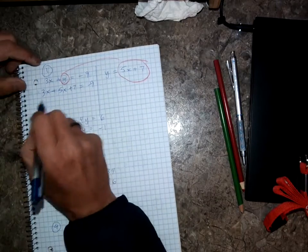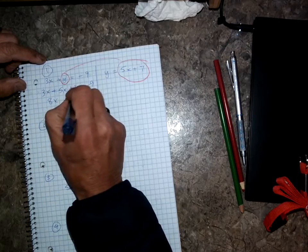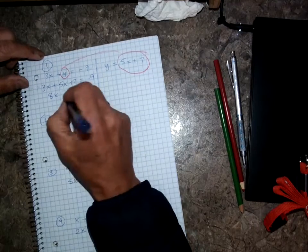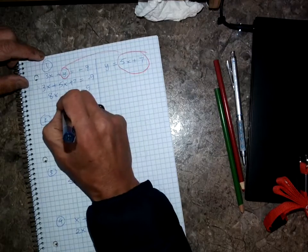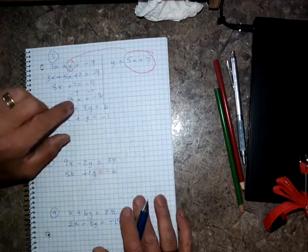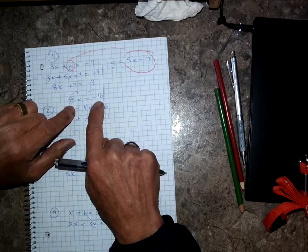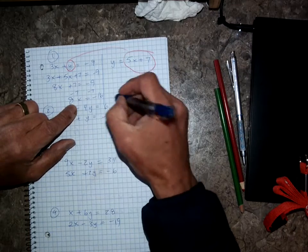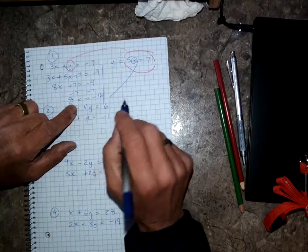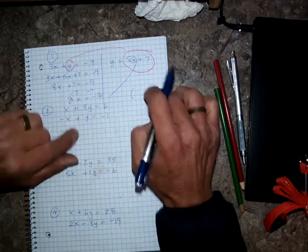I'll solve: 3x plus 5x is 8x, plus 7 equals negative 9. Then minus 7 on both sides: 8x equals negative 16. Divide by 8 and you get the answer for x. Whatever that x answer is, plug it in and get the answer for y, and you'll get a point — some x, some y.